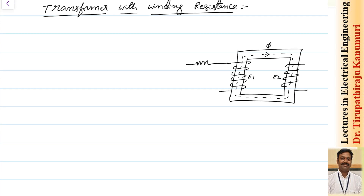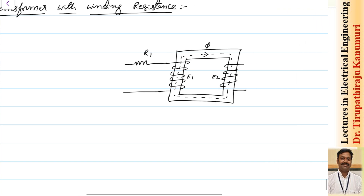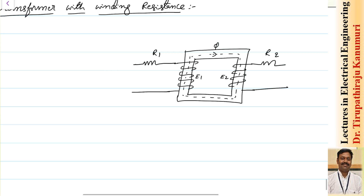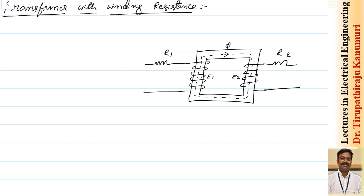Let us assume the resistance of the primary winding is represented by R1. Similarly, the resistance of the secondary winding is represented by R2. Let us only consider the resistance first; later on we will consider all the parameters and go for the exact equivalent circuit.